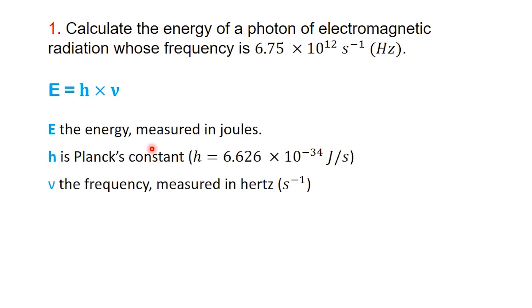This tells us how much energy a single photon carries. H is Planck's constant, a fixed value in physics: 6.626 times 10 to the minus 34 joule seconds. Nu, the Greek letter nu, represents frequency, measured in hertz, which is the same as per second.